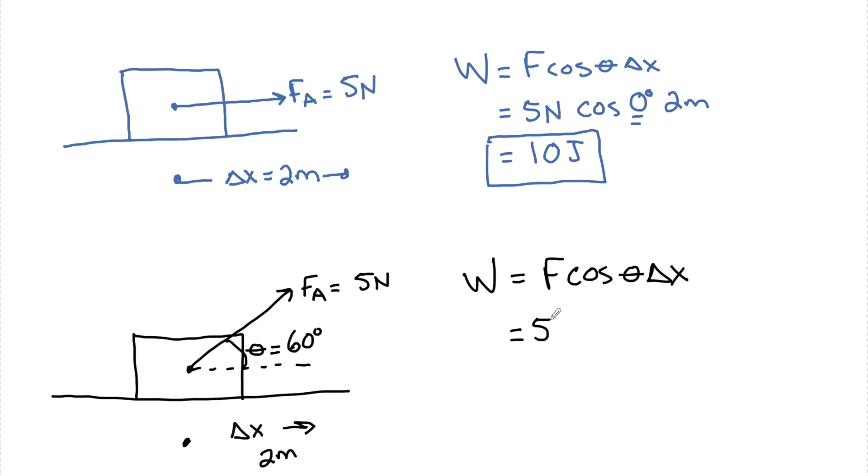We have that same 5 newton force, but now we need to factor in that cosine of 60 degrees times 2 meters. So we have 5, the cosine of 60 degrees is 0.5, times 2. We see that we have now done half the amount of work, only 5 joules.